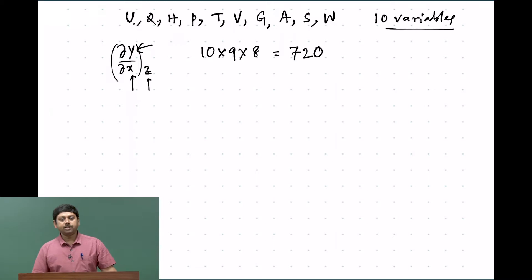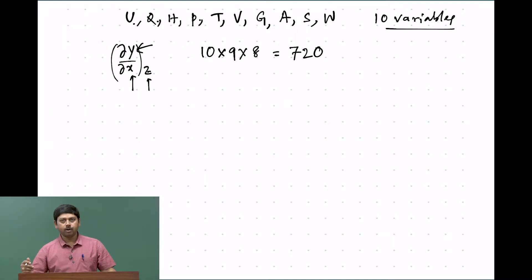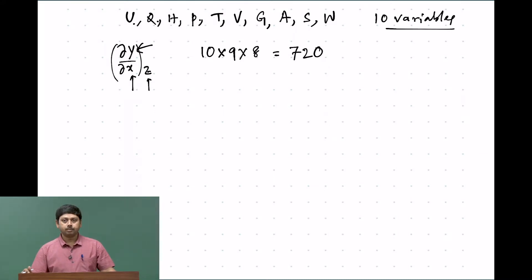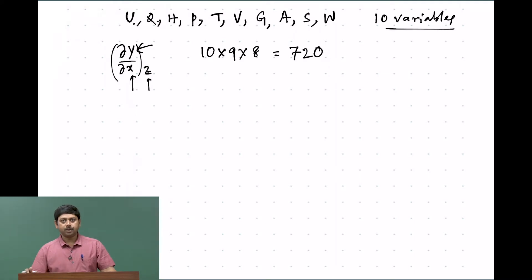Once I take the 720 possible partial derivatives and equate them with similarly large numbers of another set of partial derivatives, there are a huge number of partial derivatives that can be formulated. Therefore, converting one partial derivative to another can become a really humongous, very difficult task.